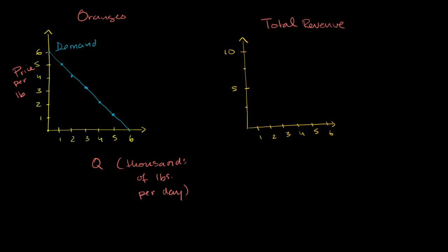What I want to start thinking about in this video is, given that we have a monopoly on something — in this example, a monopoly on oranges — and a demand curve for oranges in the market, how do we maximize our profit? To answer that question, we're going to think about our total revenue for different quantities. From that, we'll get the marginal revenue, and then compare that to our marginal cost curve to determine what quantity to produce.